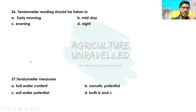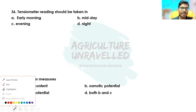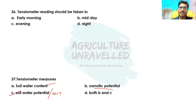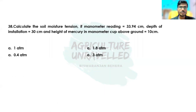Coming to the next question: tensiometer measures soil water potential, osmotic potential, soil water tension, or soil water content, or both B and C? The correct answer is tensiometer measures only soil water potential or soil water tension. It does not directly measure soil water content. After estimating soil water potential or soil water tension, the soil water content is estimated indirectly.